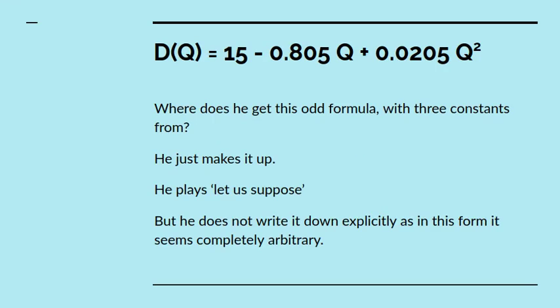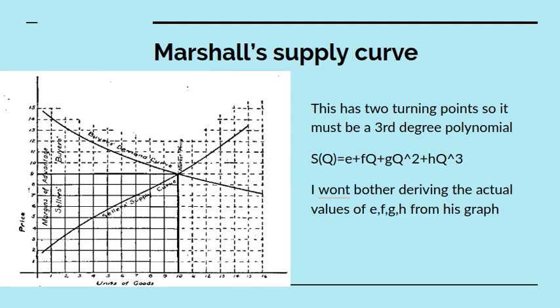That's actually the equation for the curve he's drawn. Now let's look at this. It's a really odd formula. And it's got three constants: 15, 0.805, 0.205. And where does he get these constants from? Well, he just made them up. He plays, let's suppose that this is the function. But he doesn't write it down explicitly as a polynomial, because once you write it down explicitly as a polynomial, it's clear that it's a totally arbitrary, senseless equation. But behind the scenes, that's the equation he's got.